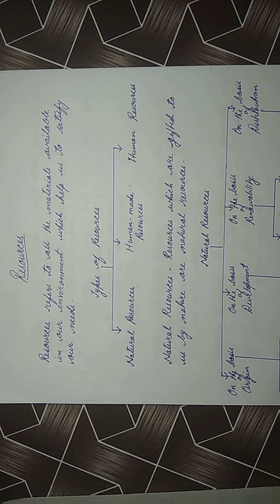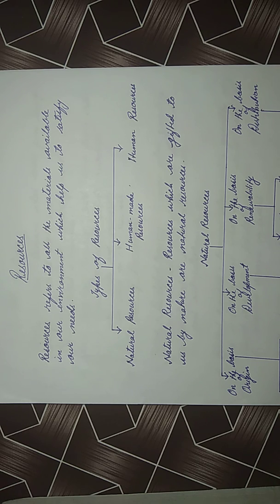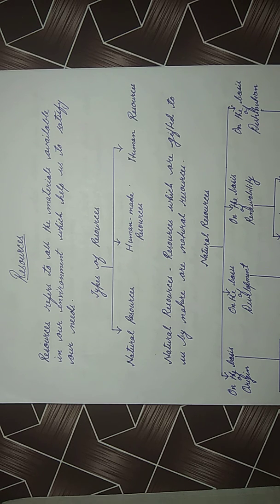Today we are going to start Geography of Class 8, Chapter 1: Resources. What are resources? Resources are anything we need or use. Look around yourself — nearly anything you pick out is called a resource. For example, smartphones are called resources. As you call your friends, check weather forecasts, or play games, they are made up of a whole range of plastic, metal and glass.